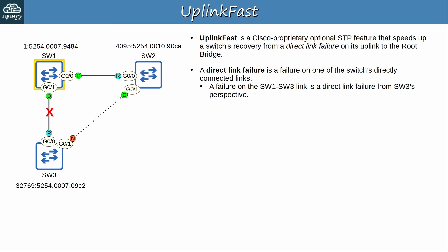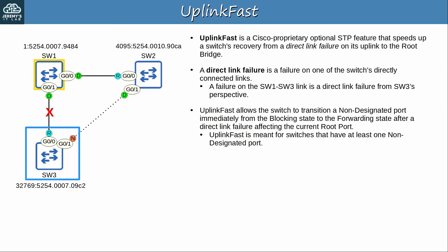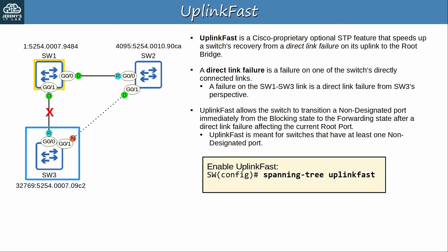So what exactly does UplinkFast do? It allows the switch to transition a non-designated port immediately from the blocking state to the forwarding state after a direct link failure affecting the current root port. So it's meant for switches that have at least one non-designated port, like SW3. Configuring UplinkFast on SW2, for example, isn't going to help if its root port goes down. The command to enable UplinkFast is simple: 'spanning-tree uplinkfast' in global config mode. Note that you should only enable it on the required switches — SW3 in this case. That's different from BackboneFast, which should be enabled on all switches.